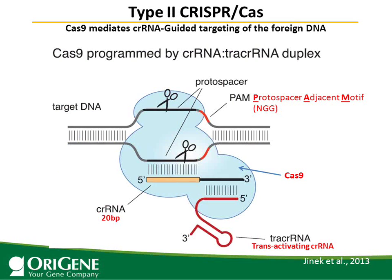There are three types of CRISPR-Cas: type 1, 2, and 3. Type 2 CRISPR-Cas only needs one Cas protein — Cas9 — meaning the crRNA-guided targeting of foreign DNA. Cas9 is a nuclease. It needs an RNA duplex consisting of crRNA and tracrRNA. TracrRNA stands for trans-activating crRNA. This RNA duplex brings Cas9, the blue part shown here, to the target DNA in a sequence-specific manner.